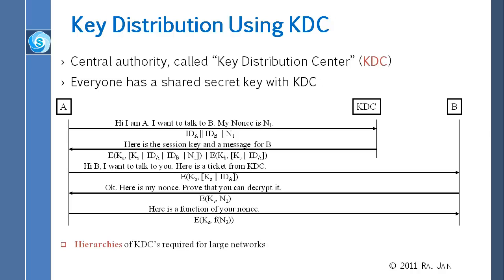The KDC is kept secure under lock and key — no hacker should be able to access it. However, it is quite possible someone could get into the KDC server and then compromise the whole company. That is one of the dangers of KDC: it is a central point, a single point of failure. If the KDC goes down, nobody can talk to anybody. Worse, if the KDC is compromised, everything is compromised — it is a single point of weakness.